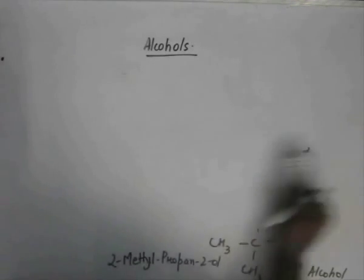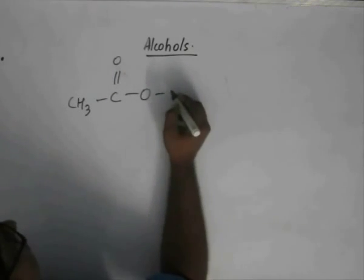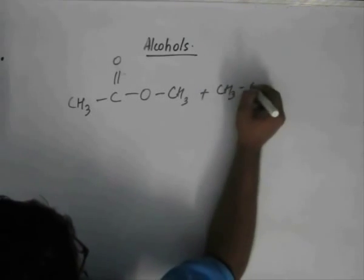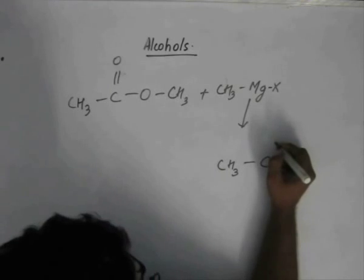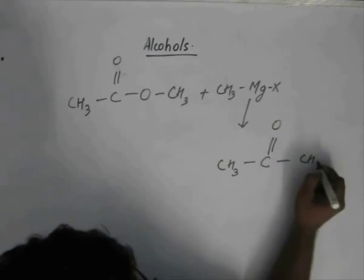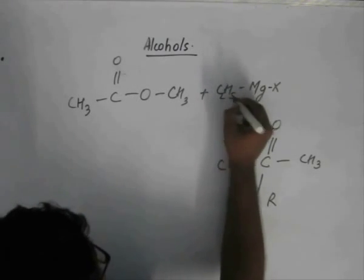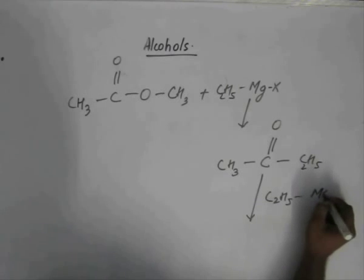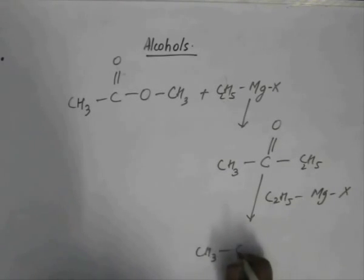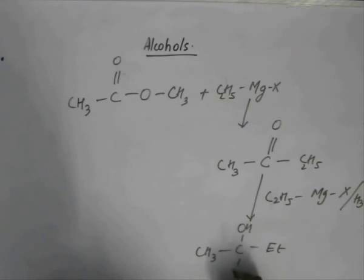Taking up the case of an ester: we take a simple ester and we have CH3MgX in excess. Using C2H5MgX, we are left with CH3 groups and, after further hydrolysis, we are left with OH — this is how an ester reacts with a Grignard reagent.